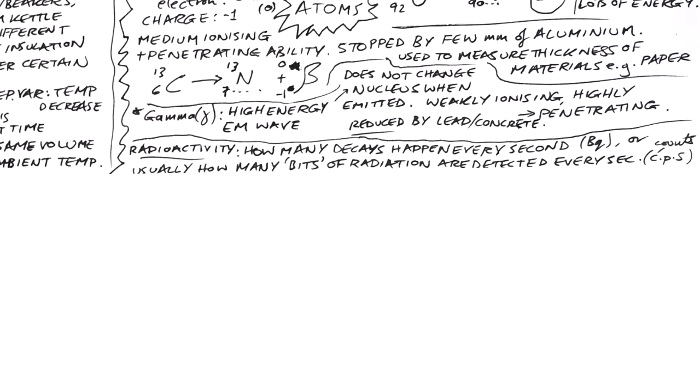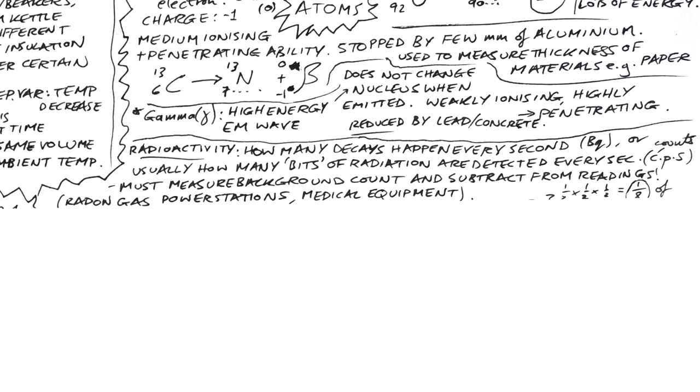Radioactivity is how many decays happen every second in a sample of radioactive material. And that has the unit Becquerel. All we can say is how many bits of radiation we are detecting every second. We're not going to detect every little bit of radiation that comes from a sample. So we don't use Becquerel. We say counts per second, can be counts per minute or counts per hour as well. Don't forget, we must measure a background count first and then take that away from all of our readings after that, because there is radiation that comes from lots of different sources like radon gas coming out of rocks and buildings, nuclear power stations, medical equipment, and also cosmic rays.